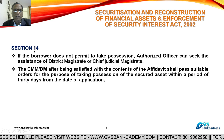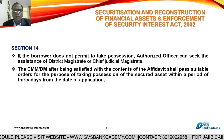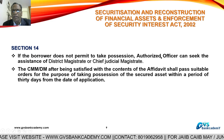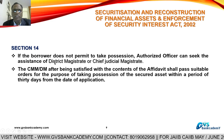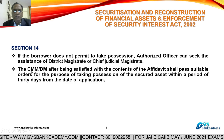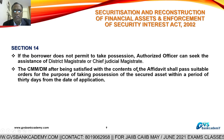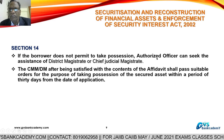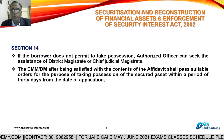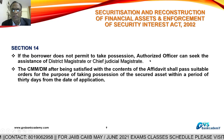Section 14 deals with assistance from the District Magistrate or Chief Judicial Magistrate. If the borrower does not permit the taking of possession of secured assets, the authorized officer of the bank can seek assistance of the District Magistrate or Chief Judicial Magistrate under Section 14. The Magistrate, after being satisfied with the application filed by the authorized officer, shall pass suitable orders for taking possession of the secured assets within 30 days from the date of application.